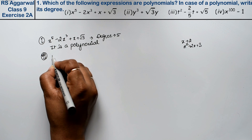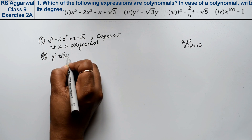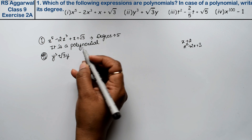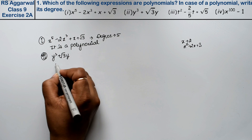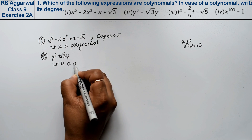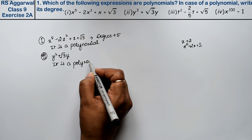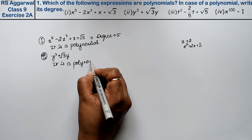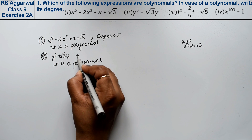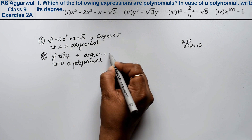Second part is y³ plus root 3 times y. The highest power is 3, so yes it is a polynomial and the degree is 3.